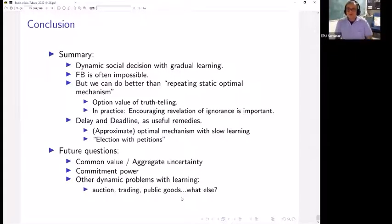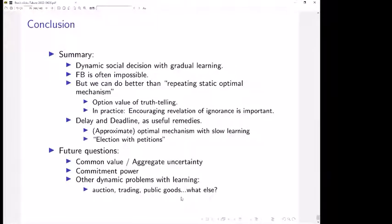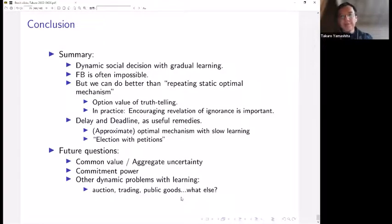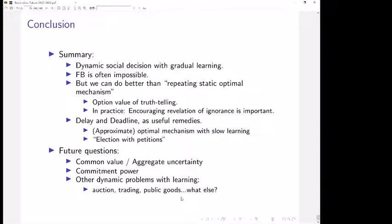Thank you. Are there any questions? This is a very interesting model and result. A practical question: it's rare to find repeated referenda. Can this be recast as the timing of the referendum — where in every period you decide whether or not to have the referendum, and at some point you hold it and the results are binding? Is there a way to recast messages so it's the same problem?